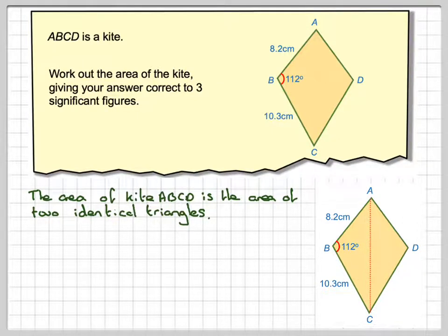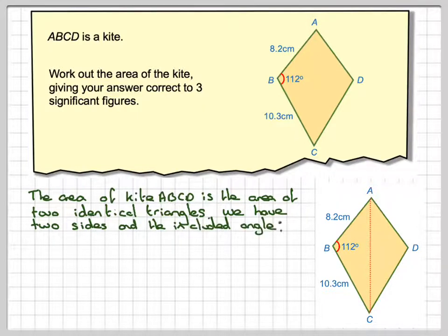So what have we got here? We've got two sides and the included angle. So to find the area in that case, it will be a half of the triangle only, times A times C times the sine of B. So it will be a half AC sine B in this case.